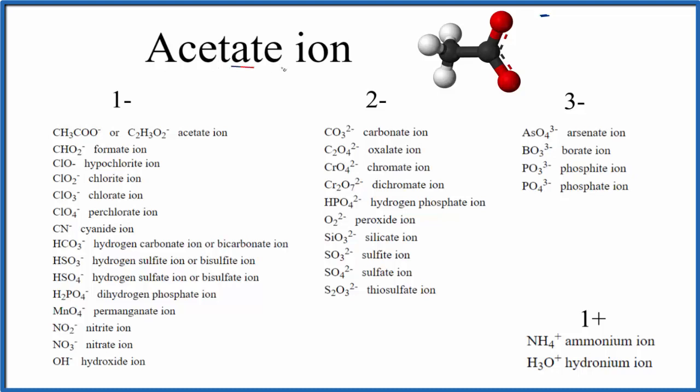We also notice that it ends in A-T-E. So when we see a chemical name with A-T-E, we know it's not going to be on the periodic table. This is a polyatomic ion.